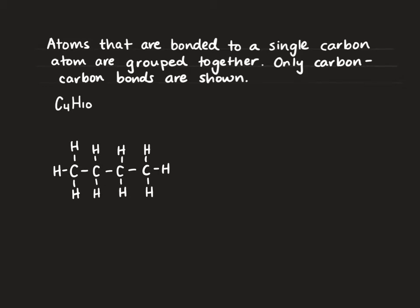We can see lots going on and we see that we have every single type of bond drawn — this would be a structural diagram. In a condensed structural diagram we're essentially going to take these hydrogens and collapse them onto this carbon.